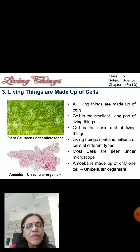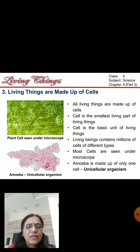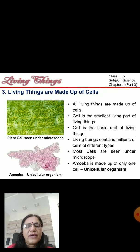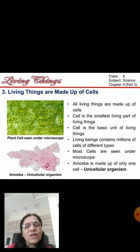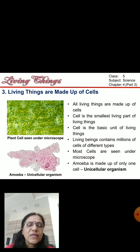Cells are the basic unit of life. They are very tiny — just as a wall is made up of small bricks, living beings are also made up of small living parts. They are so small they cannot be seen by the naked eye and can only be seen under a microscope. There are millions of cells in a living body. One organism made up of only a single cell is called a unicellular organism — its name is amoeba. Others are multicellular, meaning they are made up of many cells.